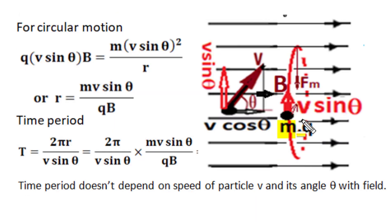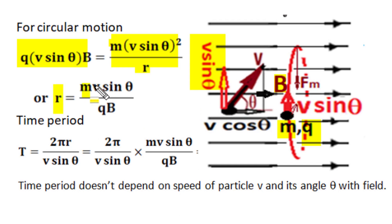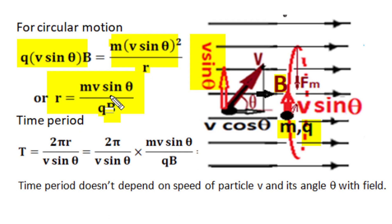For a moving charge particle of mass m and charge q, the perpendicular component v sin theta generates a centripetal magnetic force equal to qv sin theta · B, and the outward centrifugal force equals m(v sin theta)² / r. Equating centripetal and centrifugal forces gives the radius of circular motion: r = mv sin theta / qB. The radius depends on mass, charge, velocity, and the angle theta. If v sin theta is higher, the radius becomes proportionally larger.